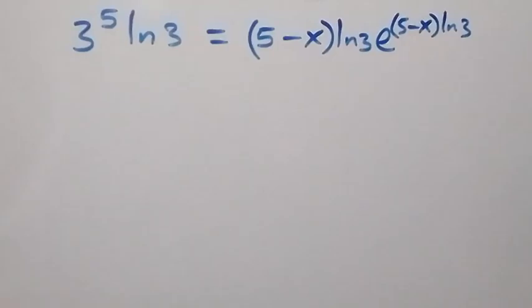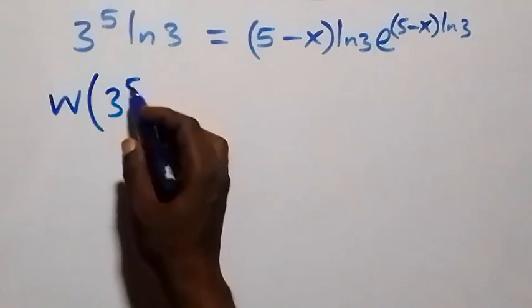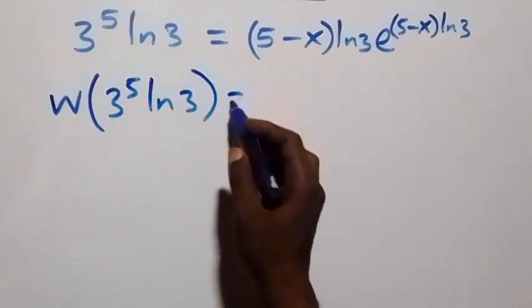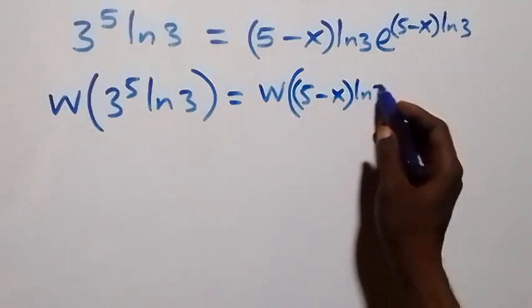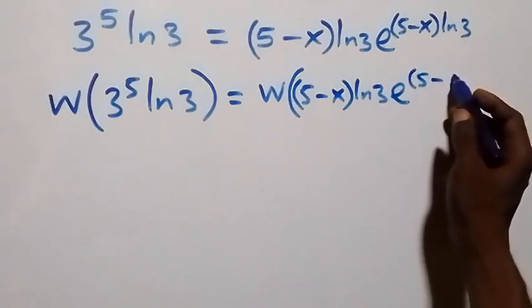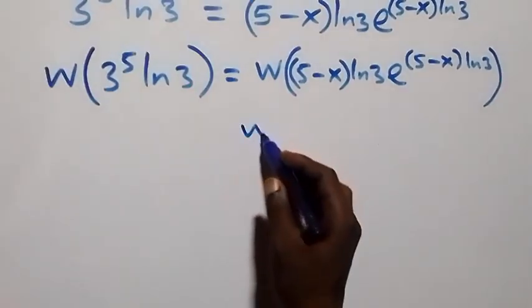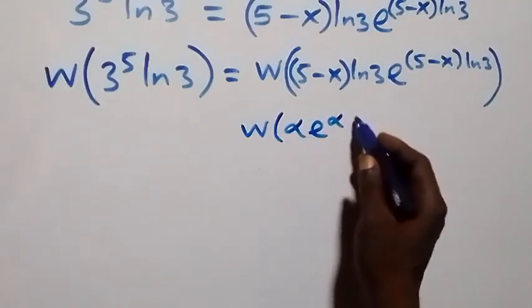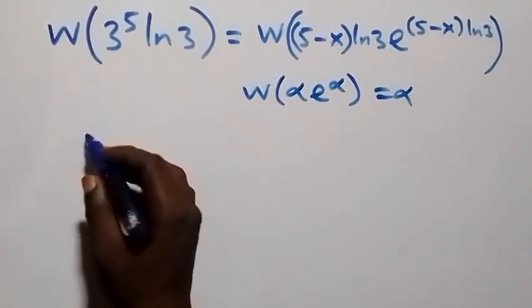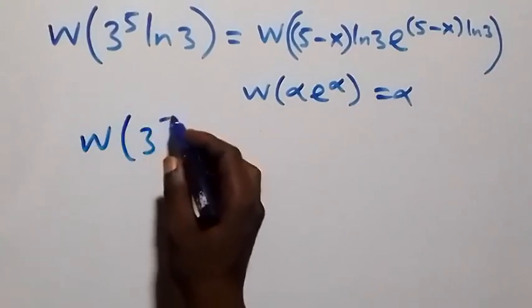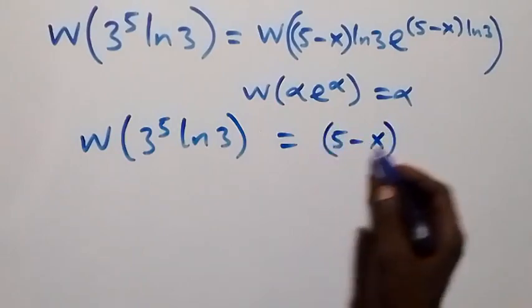Now we introduce the Lambert W function on both sides. We have W of three raised to power five times ln three equals W of five minus x times ln three, times exponent of five minus x times ln three. Since W of alpha times exponent alpha equals alpha, what we have on the right will be five minus x times ln three. So we still have W of three raised to power five times ln three equals five minus x times ln three.